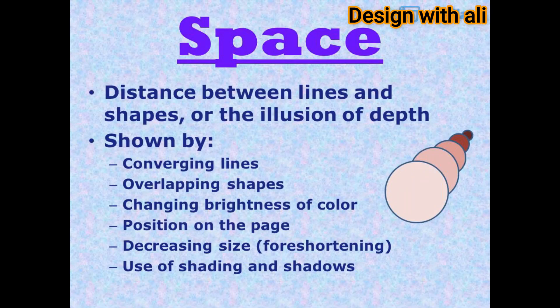Space is the distance between lines and shapes, or the illusion of depth. It can be shown by converging lines, overlapping shapes, changing brightness of color, position on the page, decreasing size, foreshortening, and use of shading and shadows.